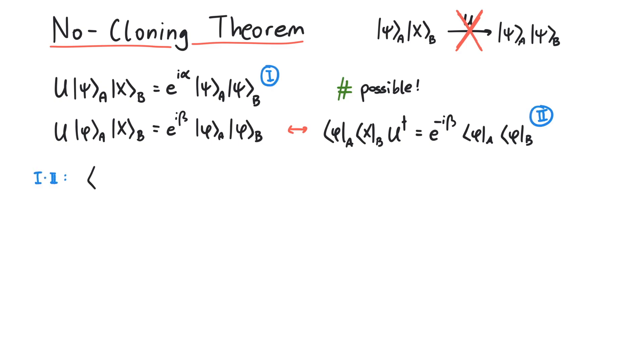Let's now multiply these equations. We see that U and U dagger meet in the middle, so we can cancel them. And on the right-hand side, we combine the phase factors into one exponential function.